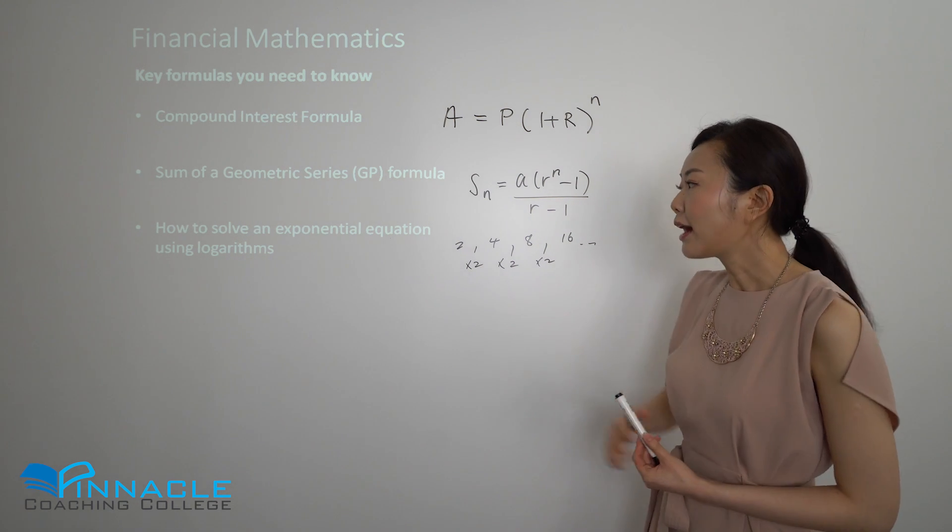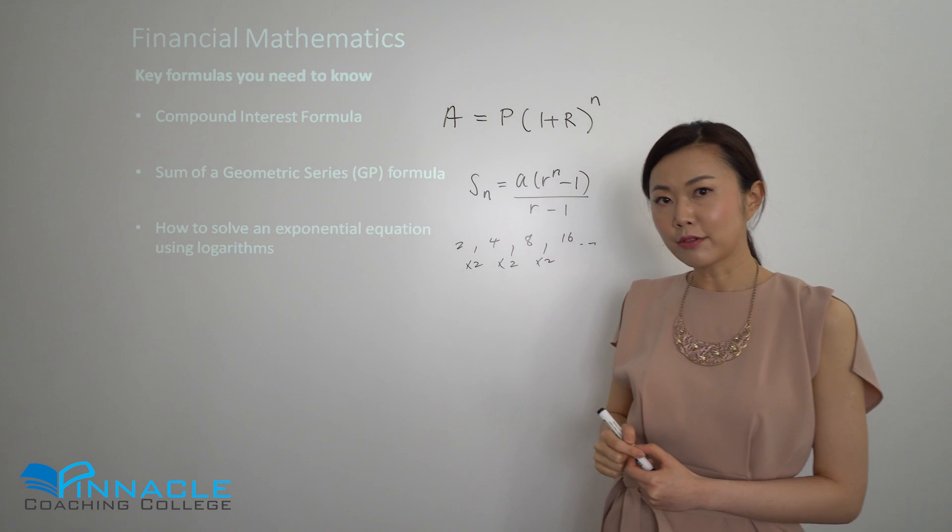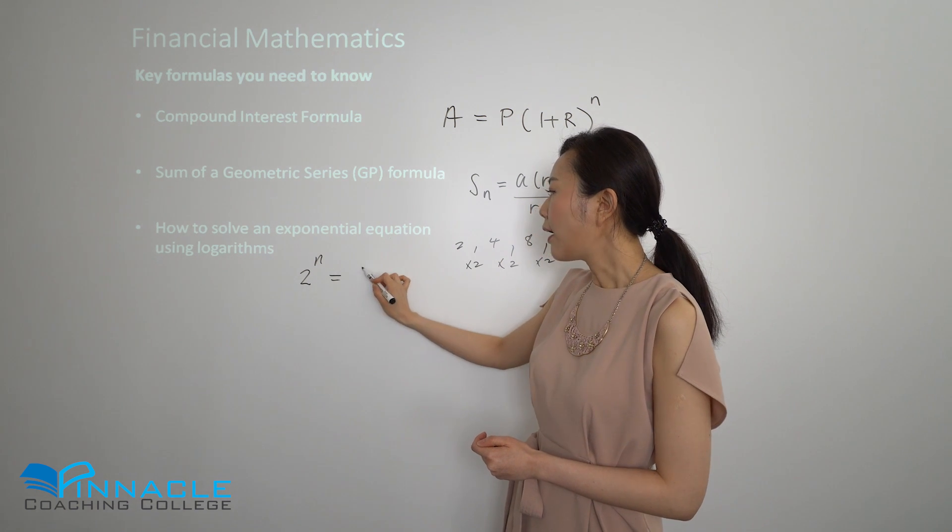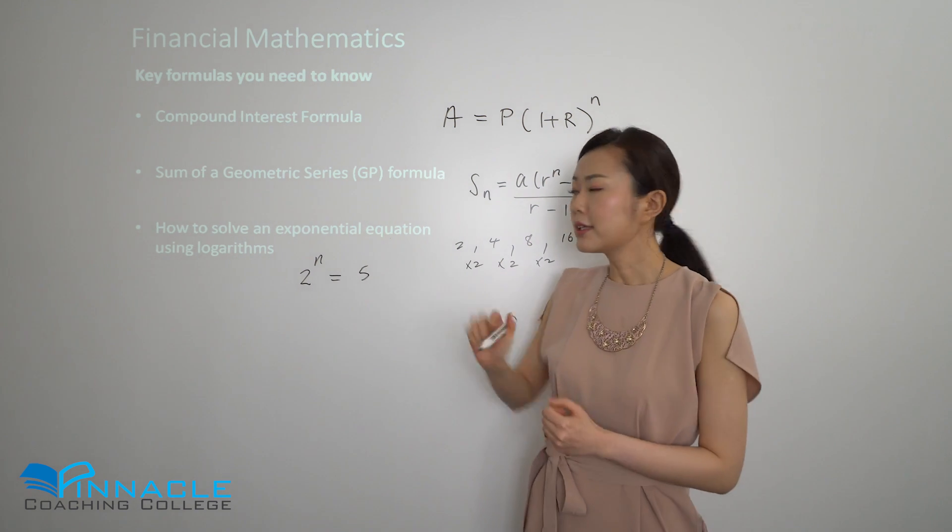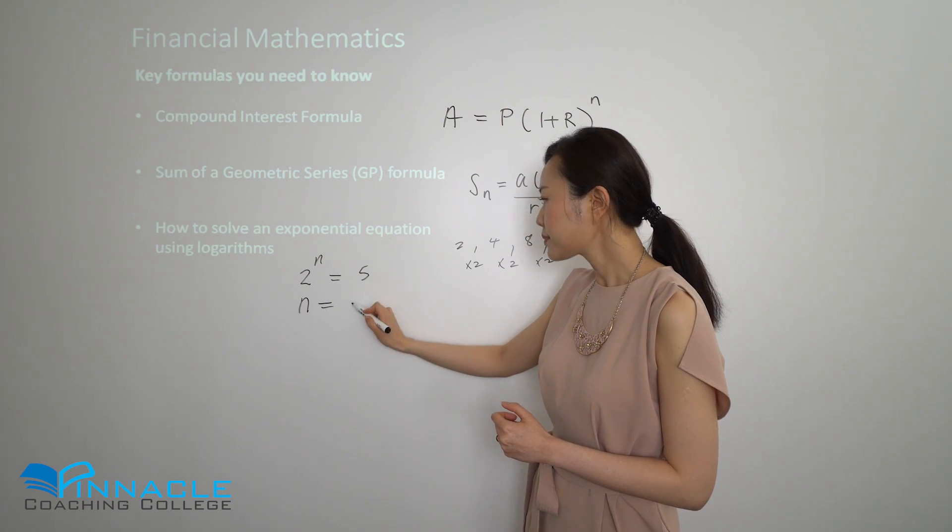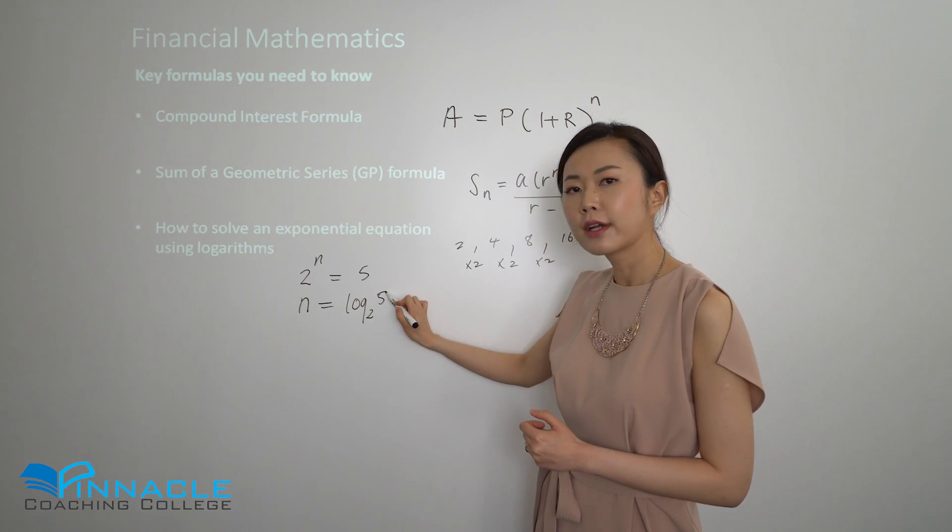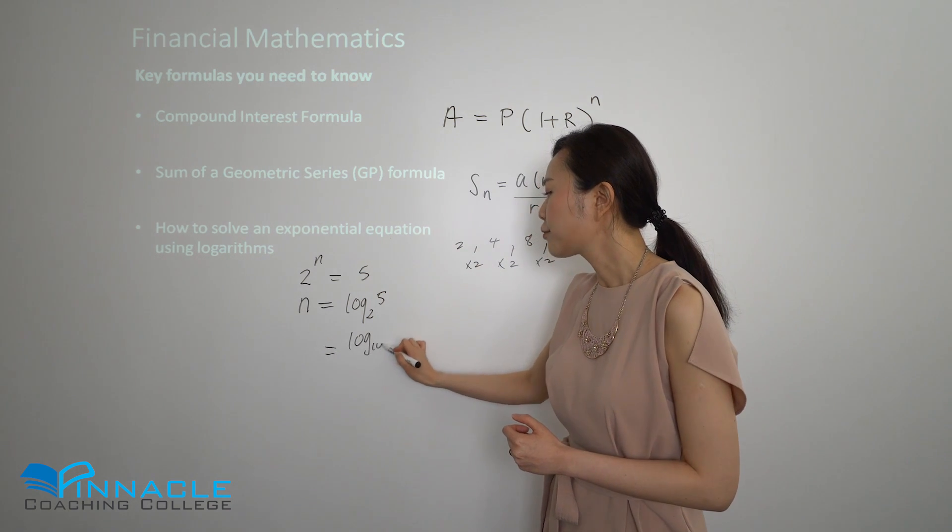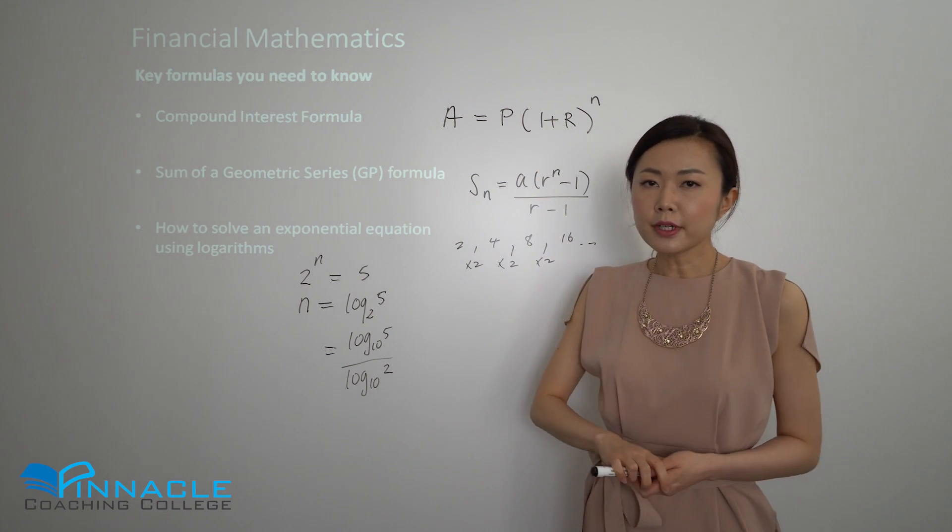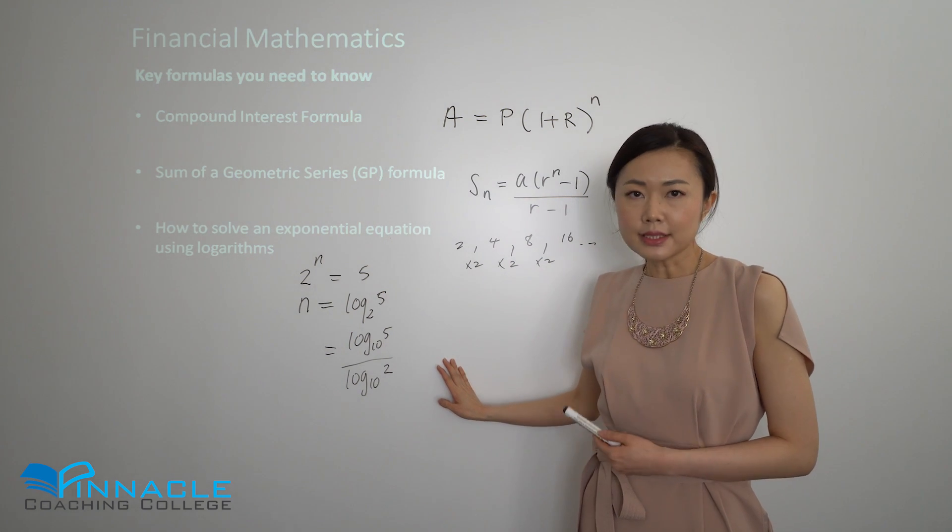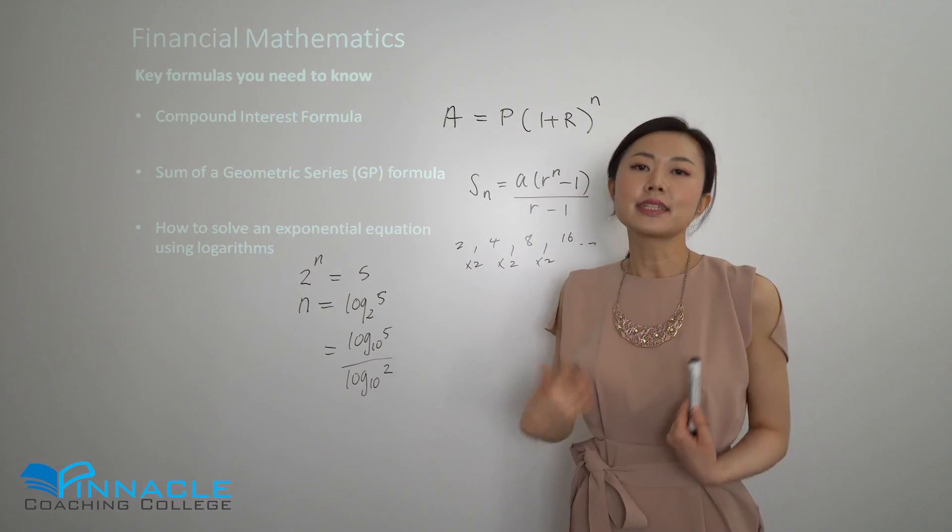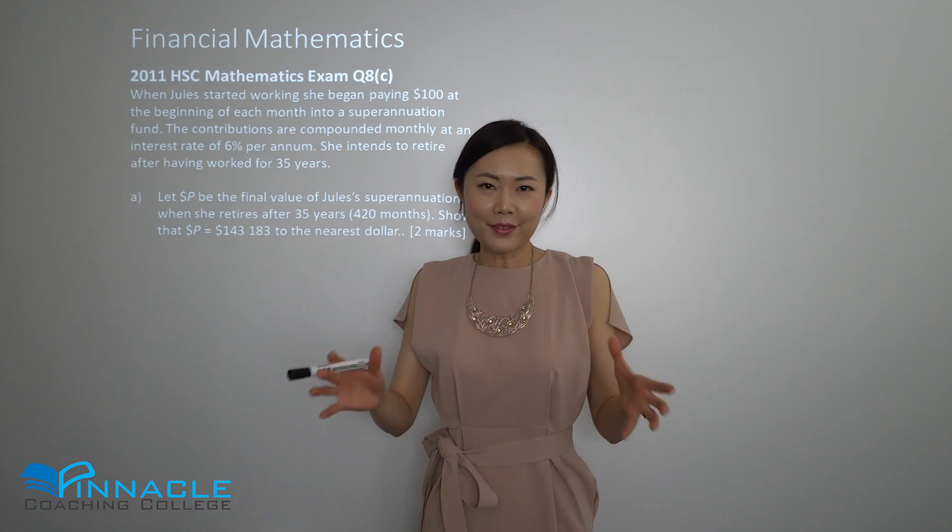Finally, you also need to know how to solve an exponential equation using logarithms. For example, if I give you 2 to the power of n equals 5, you need to be able to solve this using logarithms. If you change that into a logarithm, making the indices the subject here, it's log base 2 of 5. Then generally you can use the change of base law to put into the calculator. That's pretty much it. If you don't know how to use logarithms yet, that's fine - guess and check, just sub in different powers until you get to roughly about 5.